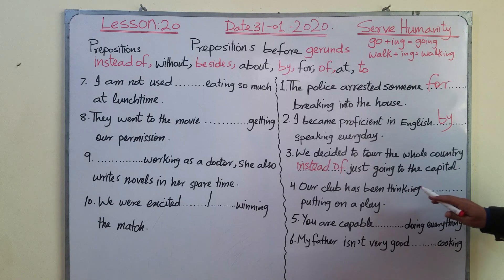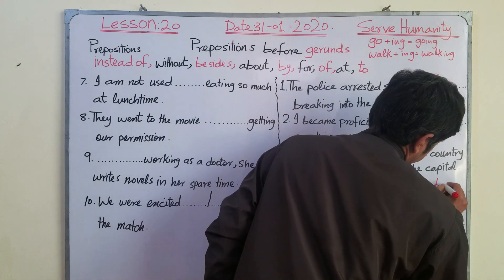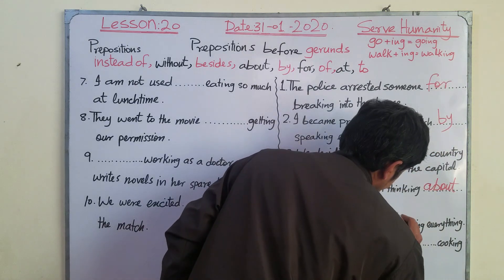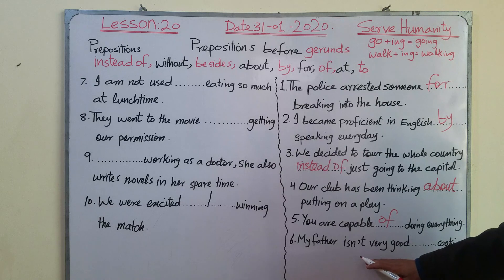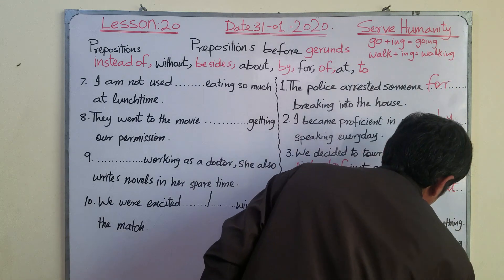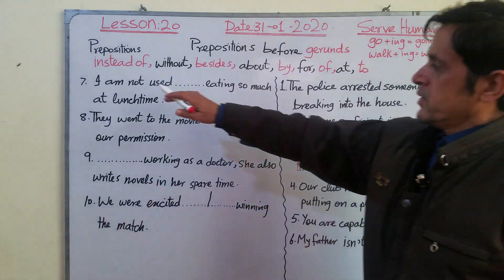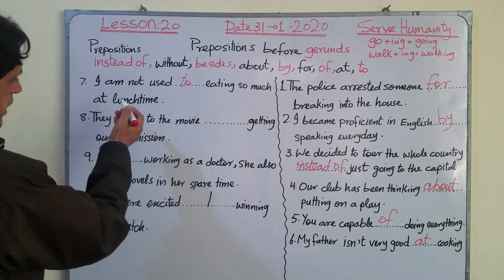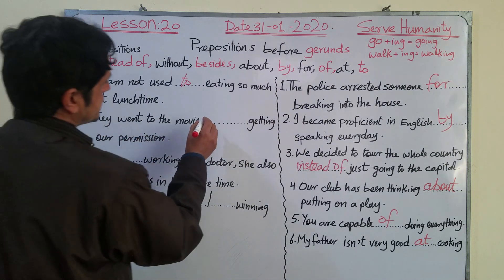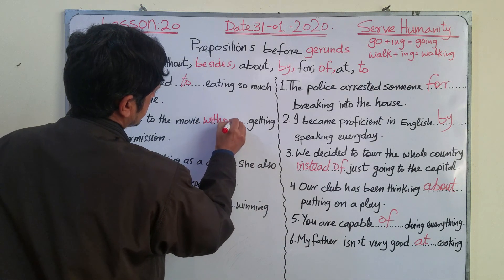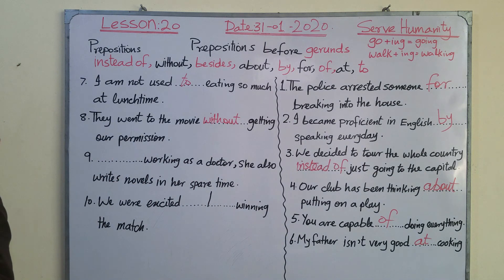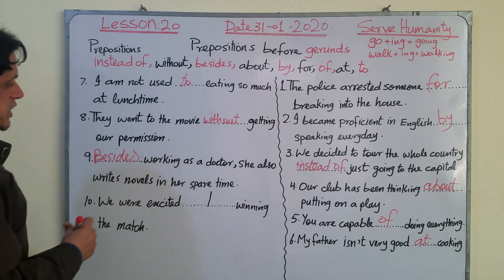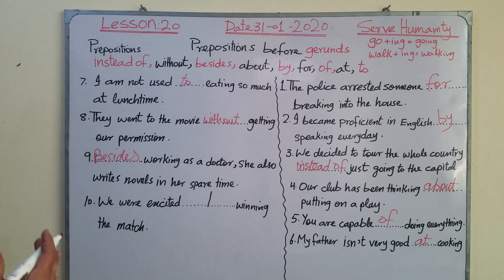Number four — our club has been thinking ABOUT putting on a play. Number five — you are capable OF doing everything. Number six — my father isn't very good AT cooking. Number seven — I am not used TO eating so much at lunch time. Number eight — they went to the movie WITHOUT getting our permission.